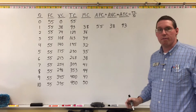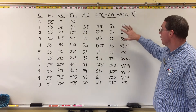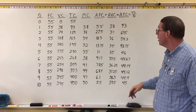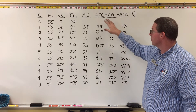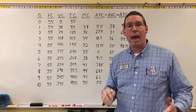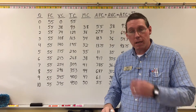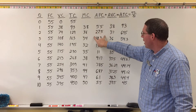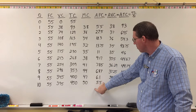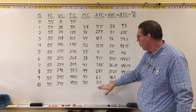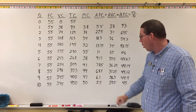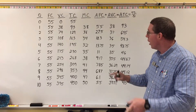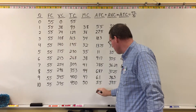I've gone ahead and filled in the calculations for average fixed cost, average variable cost, and average total cost. The first thing to notice is that average fixed cost is getting smaller and smaller. It starts at 55, and at a quantity of 10 it's at 5.5. As quantity gets larger and larger, it gets even smaller — when quantity reaches 100, 55 divided by 100 is 0.55.